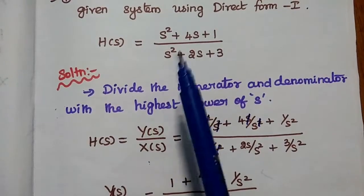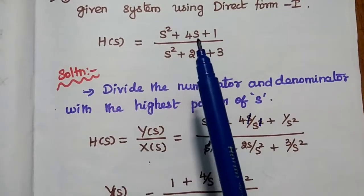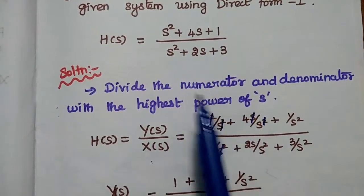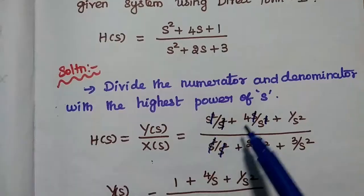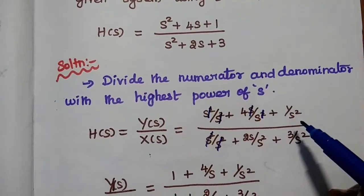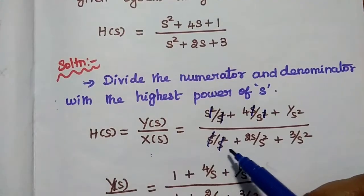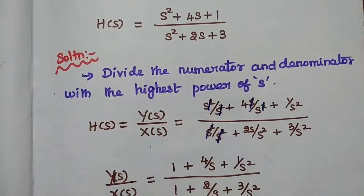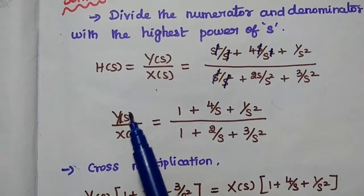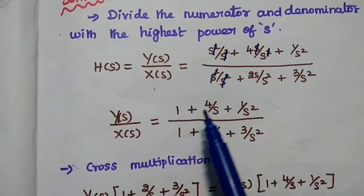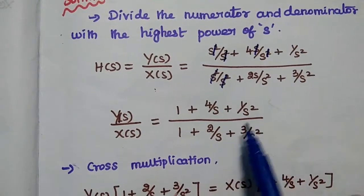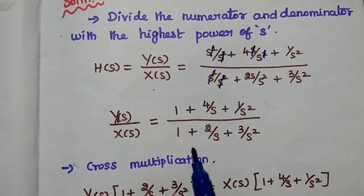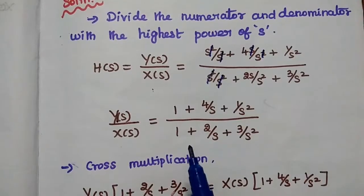Each term of the numerator and denominator can be divided by the highest power of S. So, S squared by S squared plus 4S by S squared plus 1 by S squared, divided by S squared by S squared plus 2S by S squared plus 3 by S squared. Then we can get Y of S by X of S equal to 1 plus 4 by S plus 1 by S squared, divided by 1 plus 2 by S plus 3 by S squared. This is the first step in direct form 1 method.